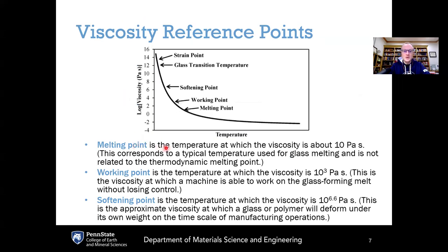The melting point, starting at the high temperature end, is the temperature at which the viscosity is about 10 pascal seconds. This corresponds to a typical temperature used for glass melting to get the right flow behavior in the melting tank. This is not related to the thermodynamic melting point, where the Gibbs free energy of the crystal phase equals that of the liquid phase. This melting point is only about viscosity being equal to 10 pascal seconds.